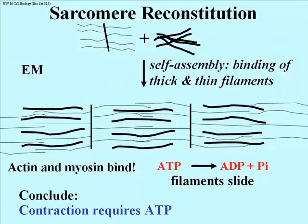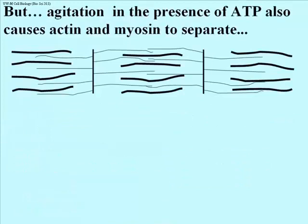So we can now say that contraction does indeed require ATP, and in the process, ATP is hydrolyzed. We also said that in order for the sliding filament mechanism to explain contraction, it has to explain relaxation as well. That is, the binding of actin and myosin has to be reversed at some point in order to relax a muscle — otherwise the muscle is in rigor.